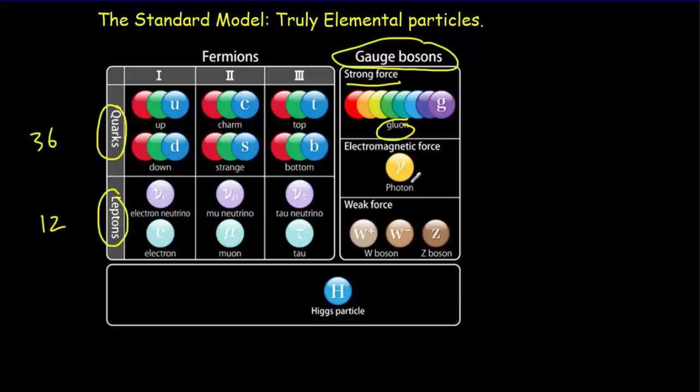The exchange particle responsible for the electromagnetic force is simply the photon. For the weak force, which is responsible for radioactive decay, there's three different types of bosons: the W plus and W minus bosons, and the Z boson. These are also called the intermediate vector bosons.